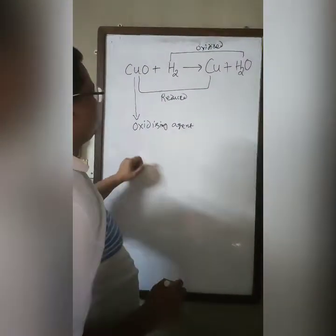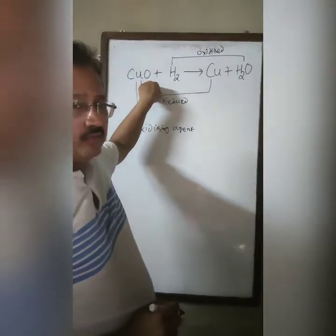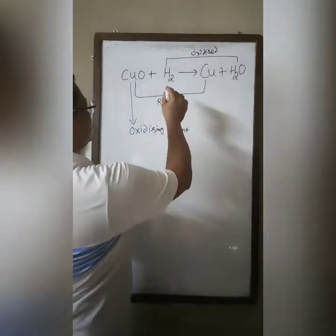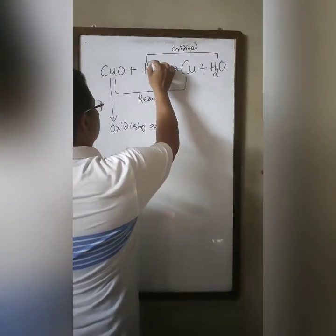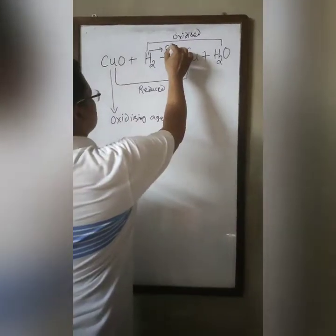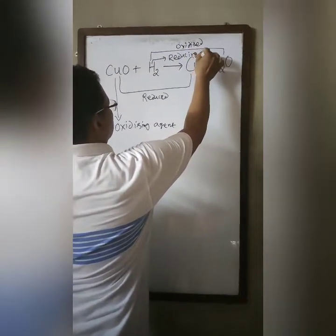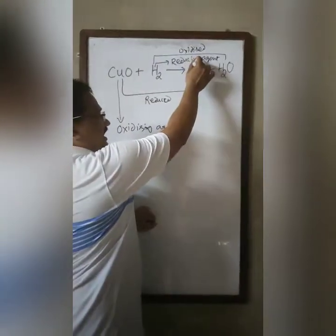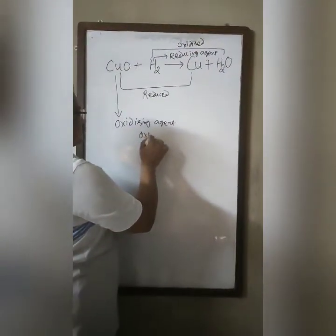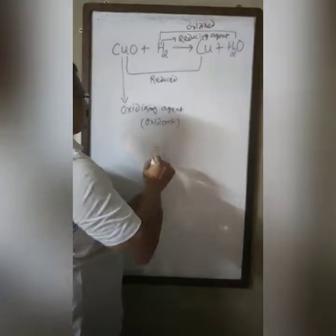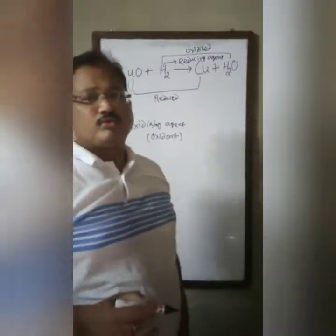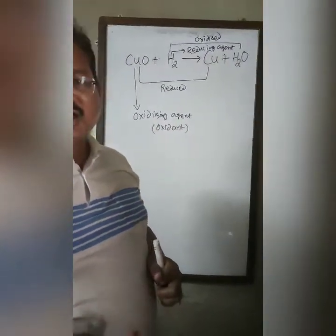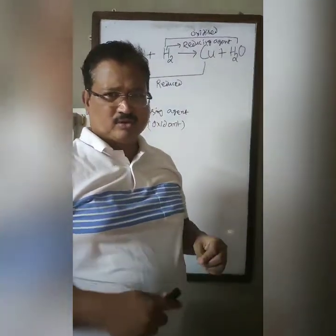Hence copper oxide can also be called an oxidizing agent. And copper oxide which is reduced — that is because of hydrogen — so hydrogen can be called a reducing agent, or in other words it is also called reductant. Copper oxide is called oxidant. Oxidant is the substance which helps other substances to oxidize, or oxidant is the oxidizing agent. Reductant is the reducing agent.